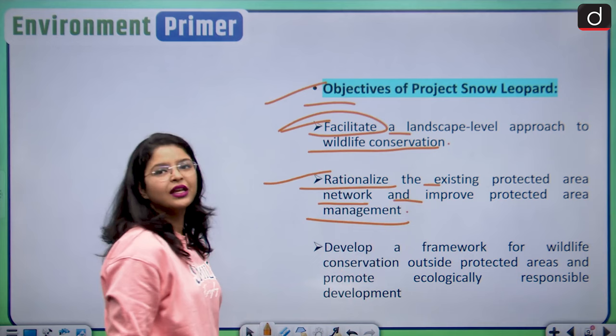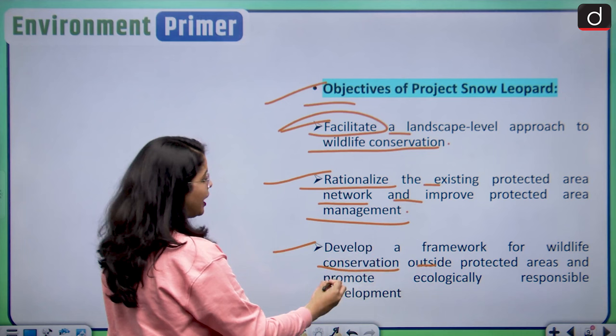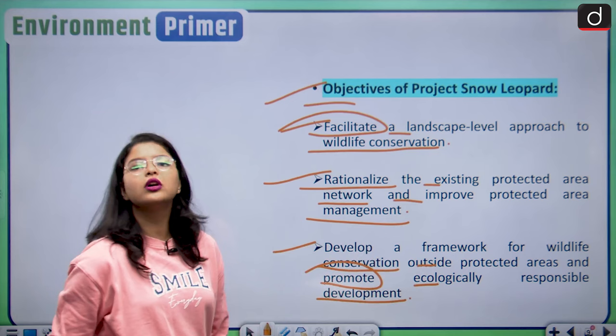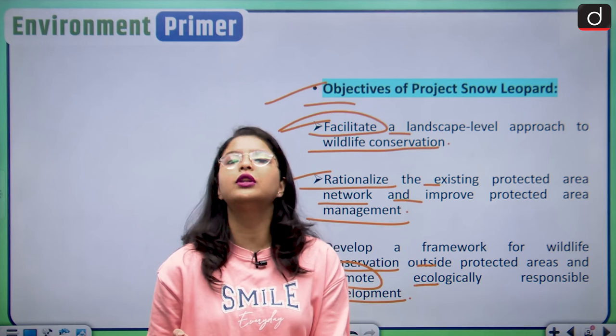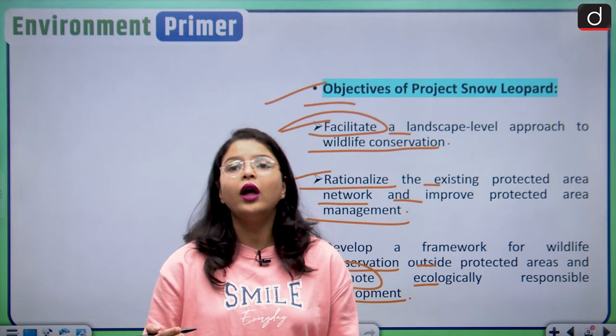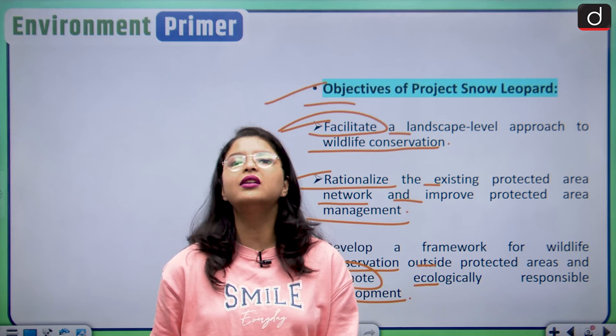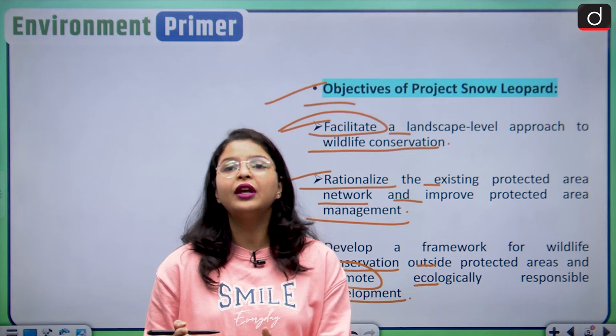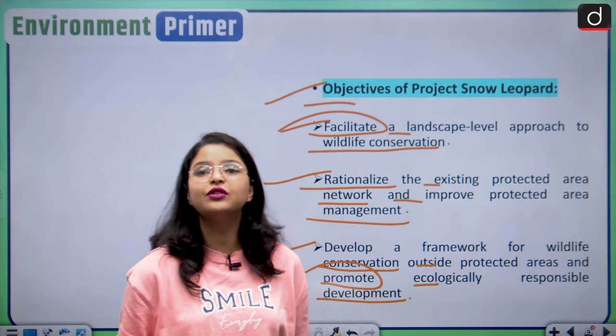Another objective is to rationalize the existing protected area network and improve protected area management. There is also a need to develop a framework for wildlife conservation outside protected areas and promote ecologically responsible development, because legal status currently only applies to protected areas. Endangered species do not enjoy legal status beyond the protected area, so a framework must be developed for their protection outside protected areas as well.